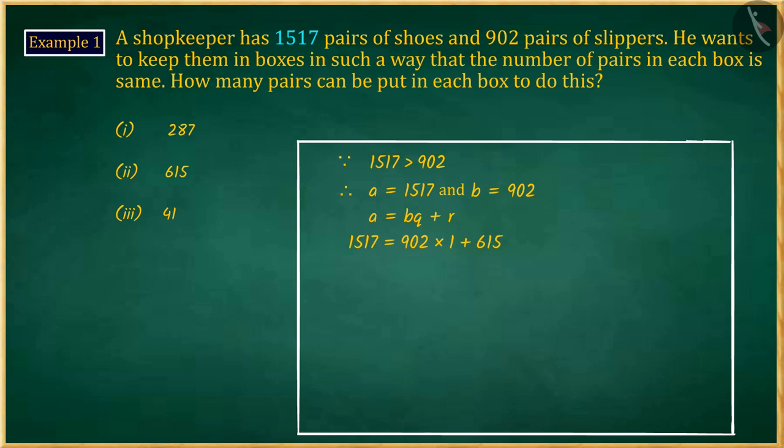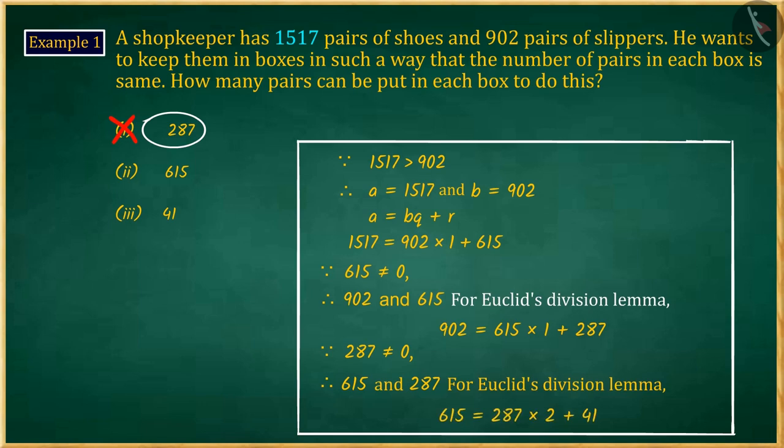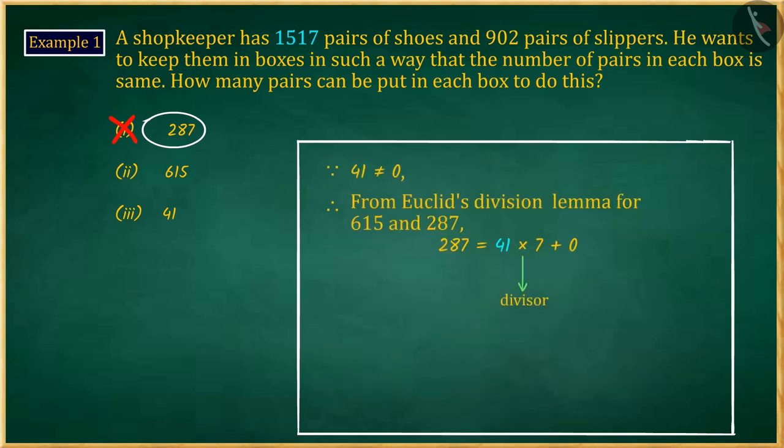If you have selected option 1, then it's a good try, but it's a wrong answer. While using Euclid's division lemma, you hastily selected dividend in place of divisor.